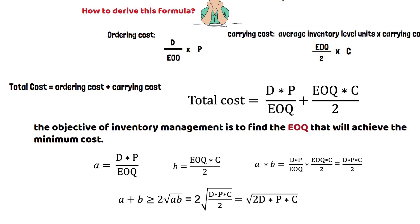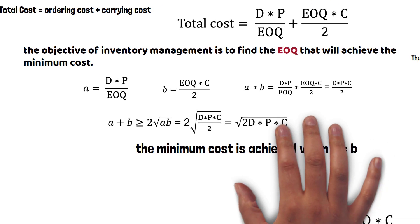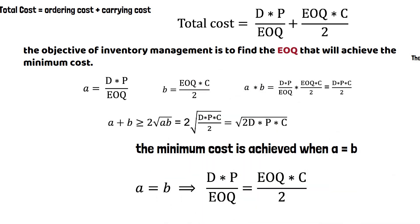We want to know the cost, a plus b. From mathematics, we know a plus b is greater than or equal to 2 times the square root of ab. The minimum cost is achieved when a equals b.